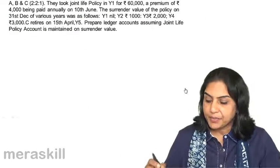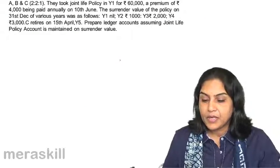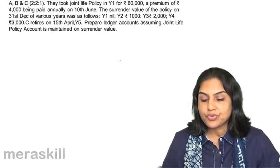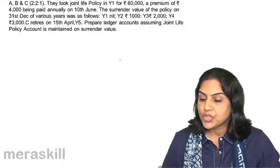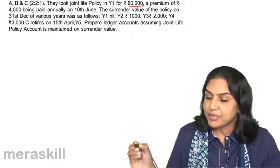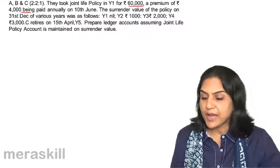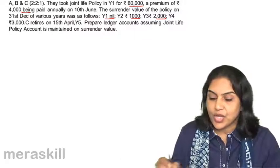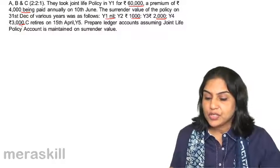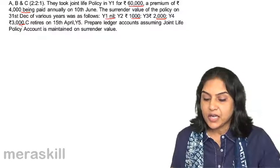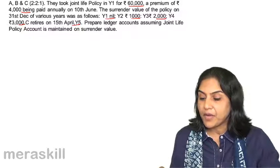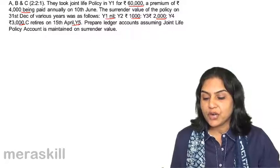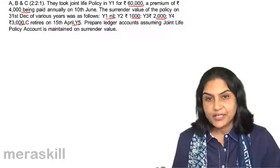Let us take an example. A, B and C share profits and losses in the ratio 2:2:1. They took a joint life policy of 60,000 and 4,000 is paid annually. The surrender values are: nil, 1,000, 2,000, and 3,000. C retires in April of year 5. Prepare ledger accounts assuming joint life policy account is maintained on surrender value.